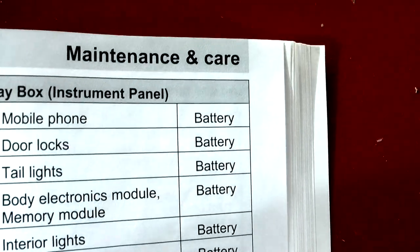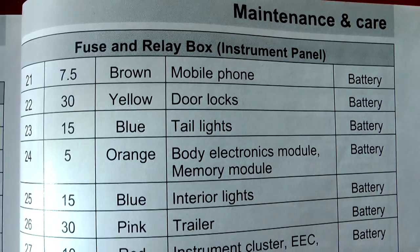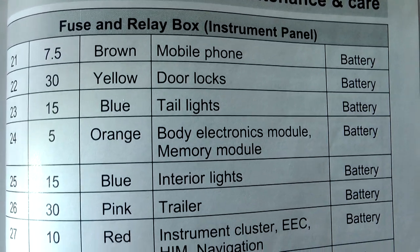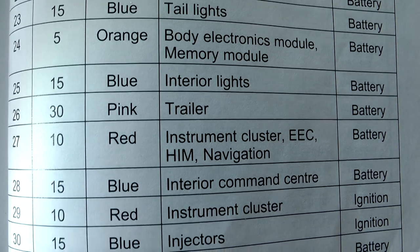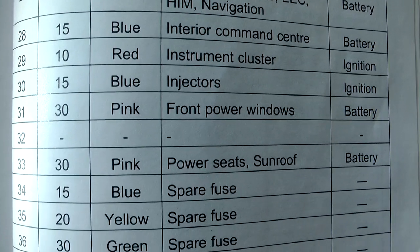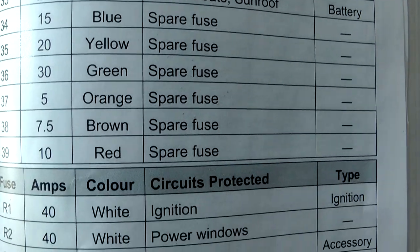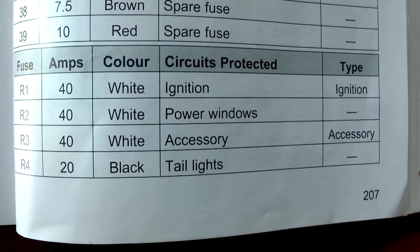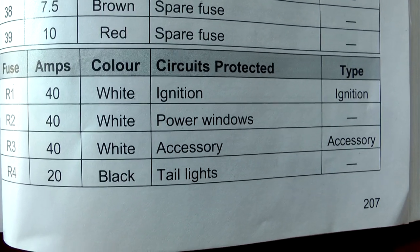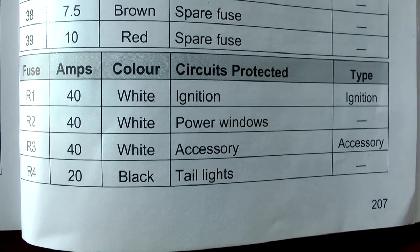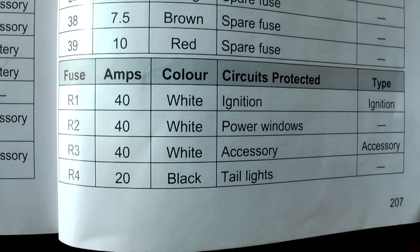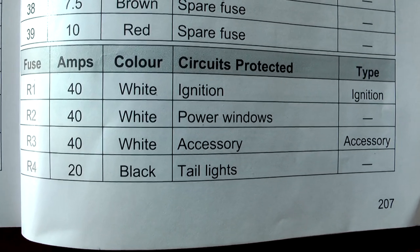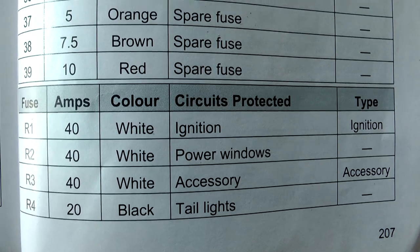And up here, continuation, 21, 22, etc. And then you have your big block fuses there. One for ignition. This is the R1, R2, R3, R4. Accessory taillights, power windows, etc.